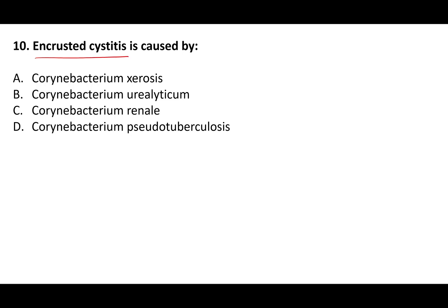Encrusted cystitis is caused by Corynebacterium urealyticum. As the name suggests, it is urease-positive — it produces ammonia, which leads to cystitis, pyelitis, and crust/encrustation formation, hence 'encrusted cystitis.' C. urealyticum is a normal skin commensal but can cause infection when introduced during catheterization or other interventions.